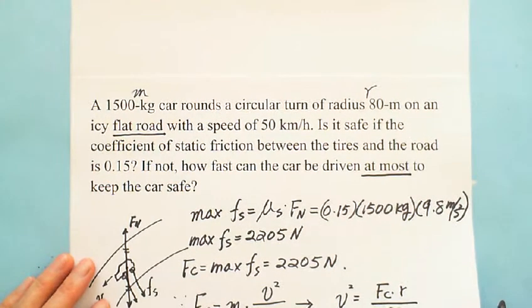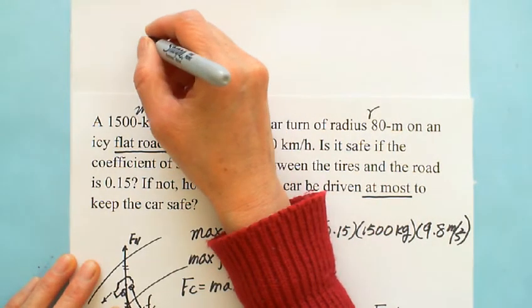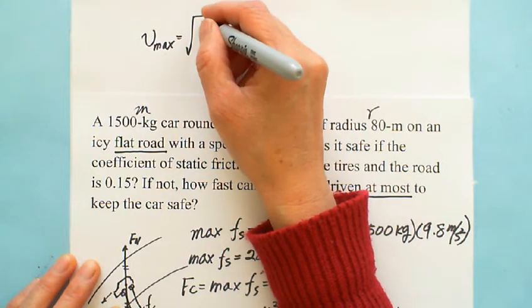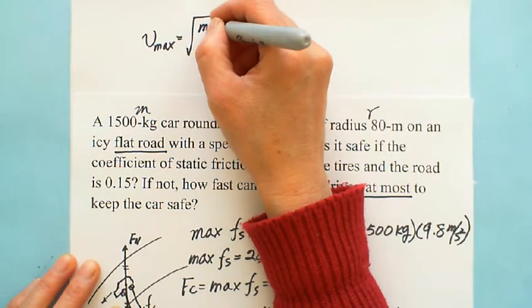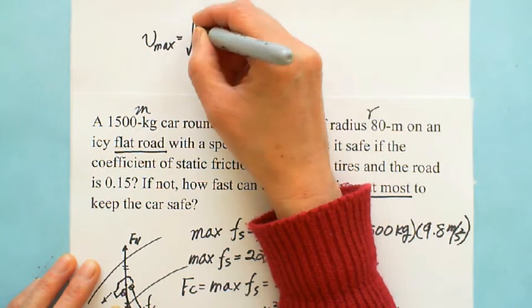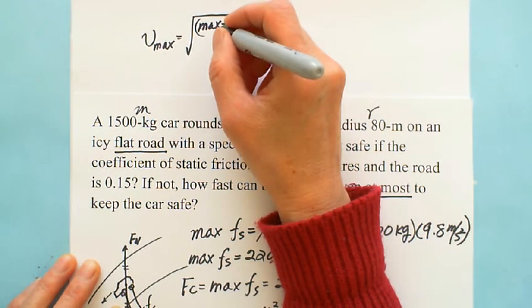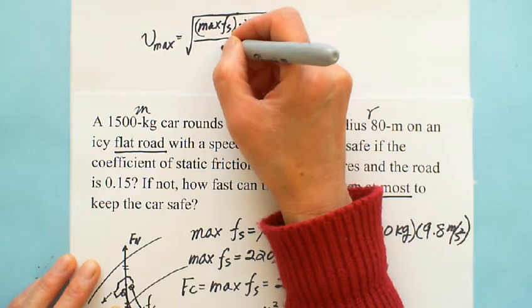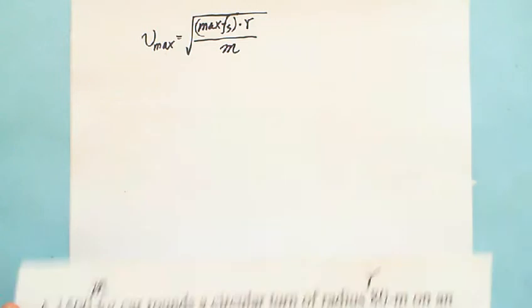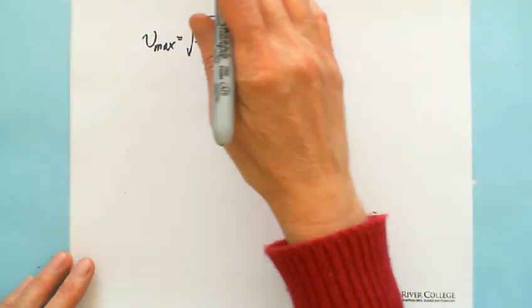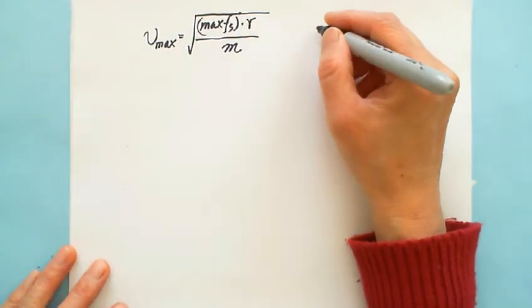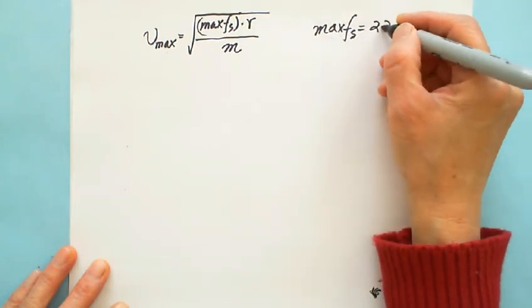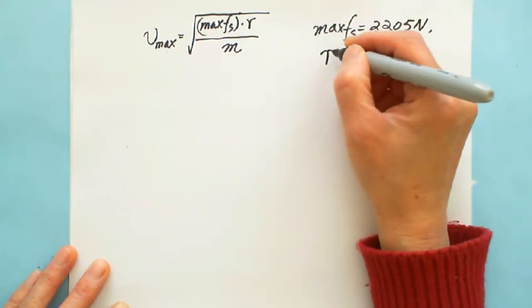So now go to the other page. The maximum, this way we have v maximum. In this question, we have this one is maximum friction, which is acting as centripetal force, multiply the radius divided by m. So we plug the numbers in.